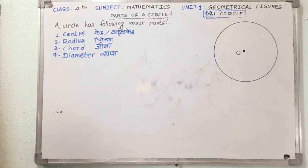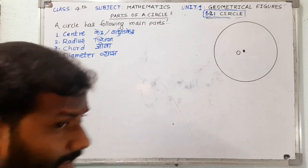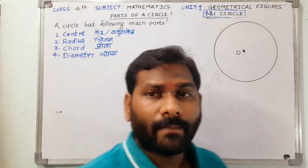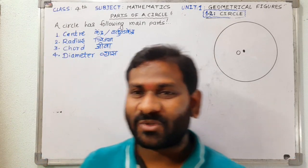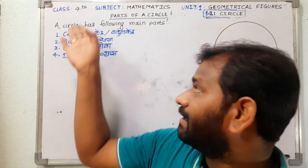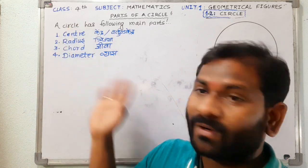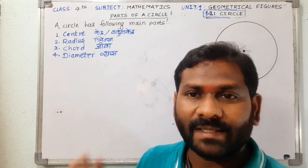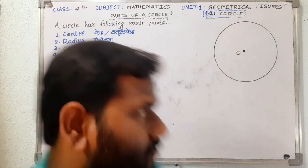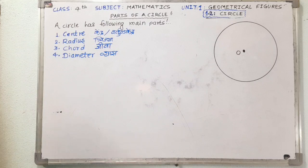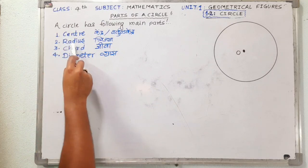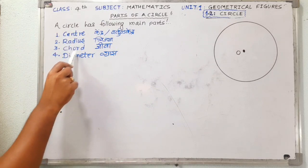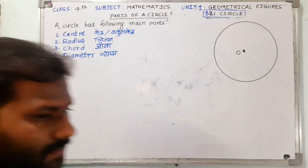There are many other parts also, but as we are little champs, we have to focus on the four important parts of the circle. Those parts are: the center, then the radius, the chord, and the diameter.